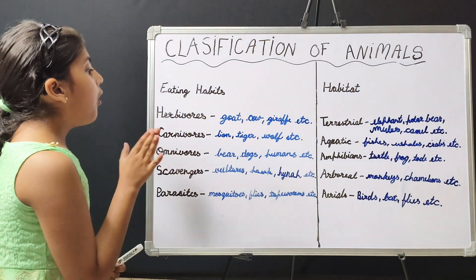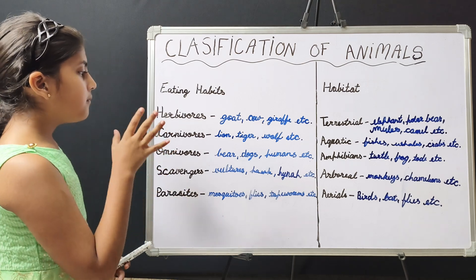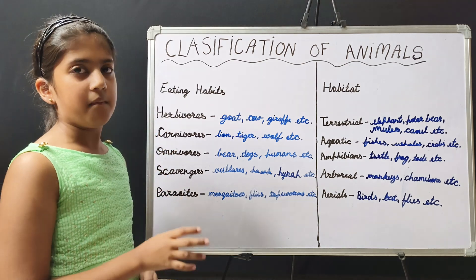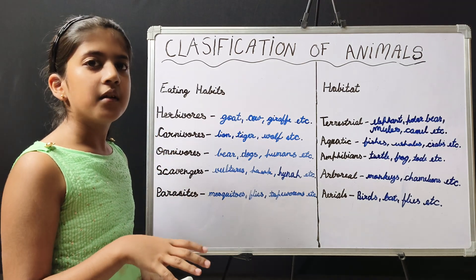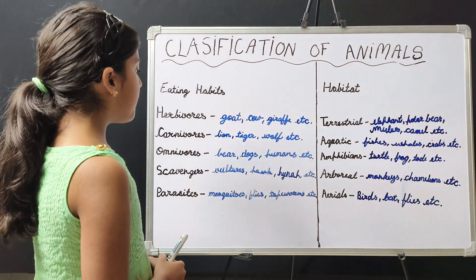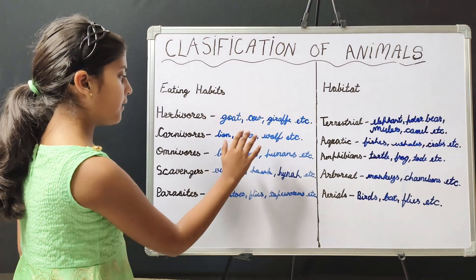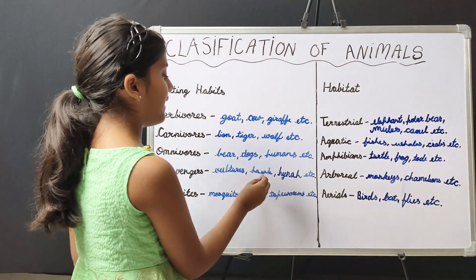Omnivores are those animals which eat plants and animals. For example, bear, dogs, humans, etc.